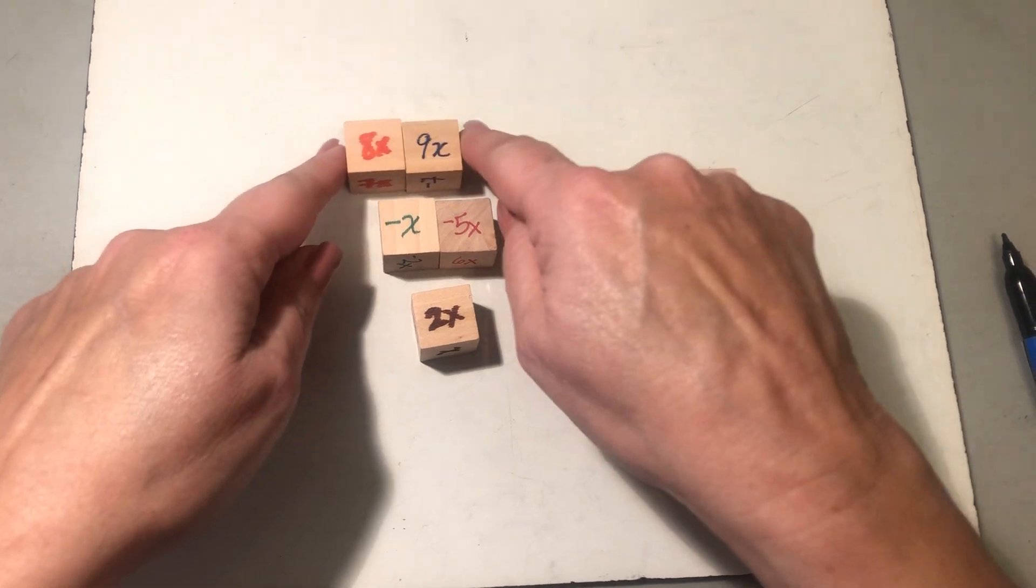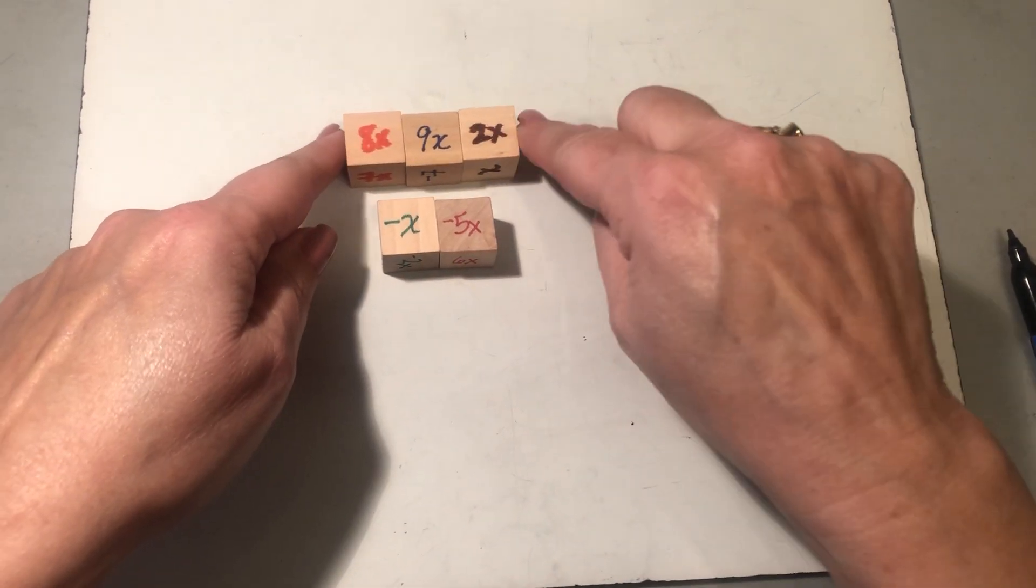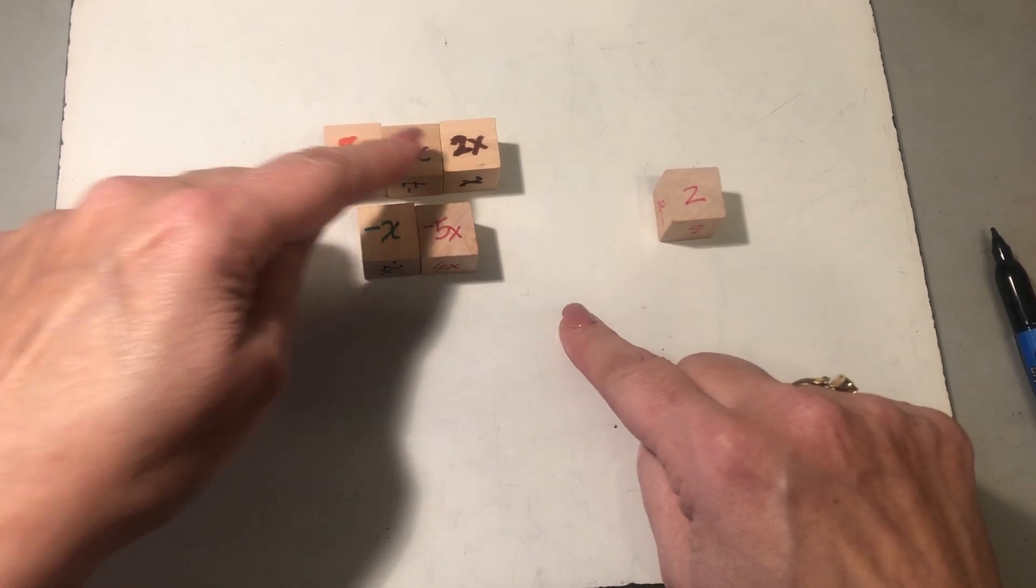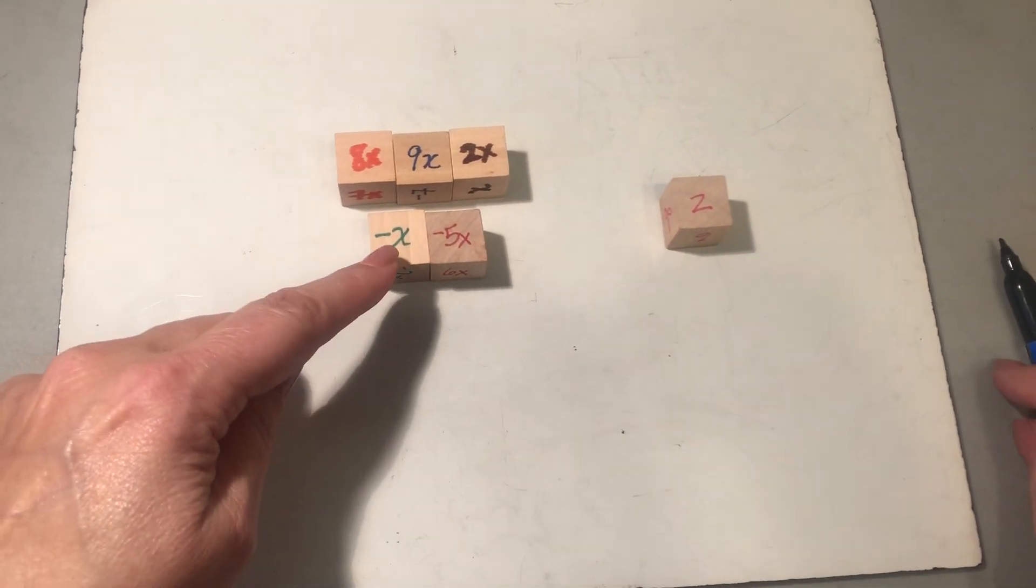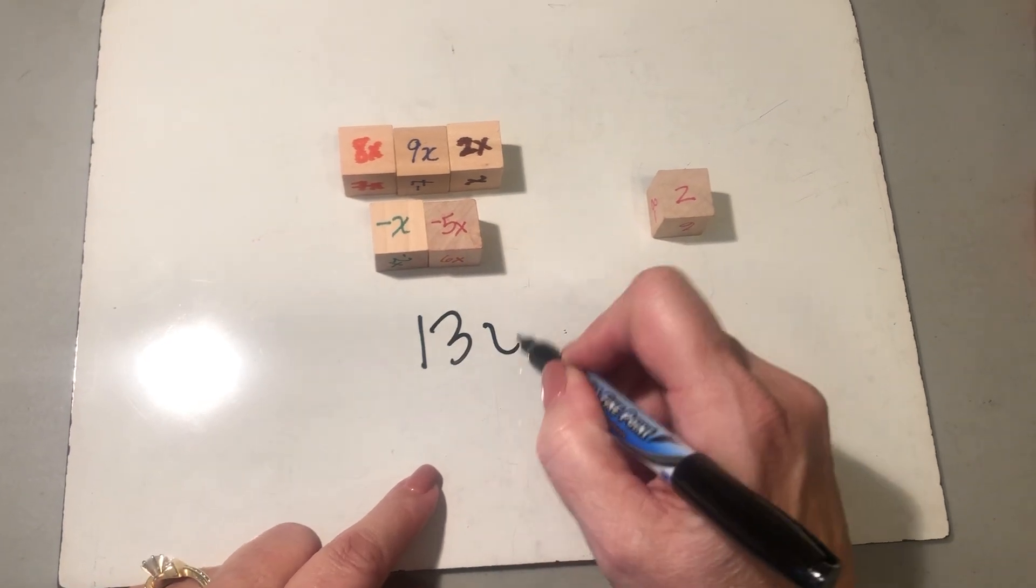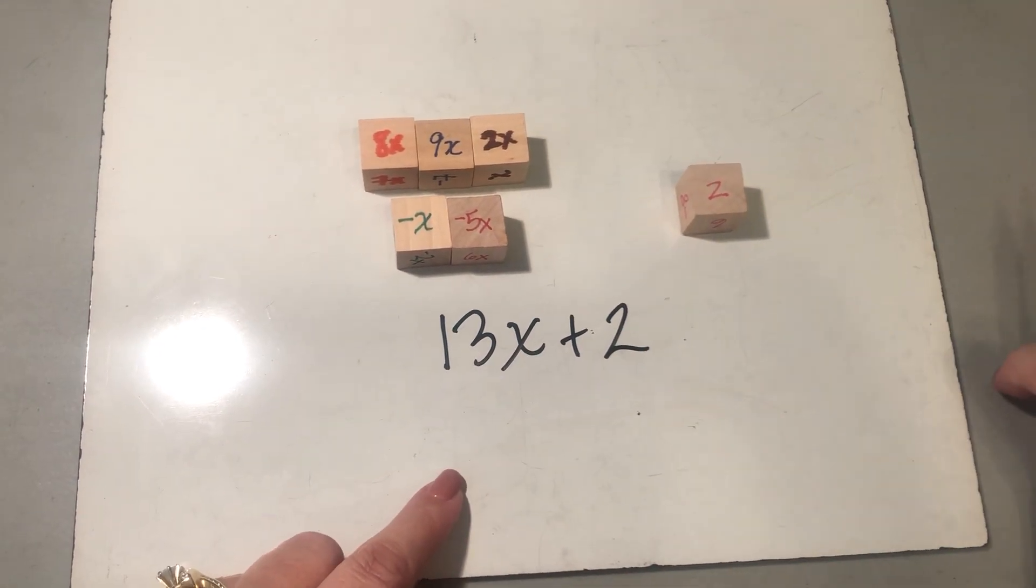I'm going to group them. I have no opposite. So here I have 17, I have 19 x's all together. 19 take away 6 is 13 x's and the positive 2.